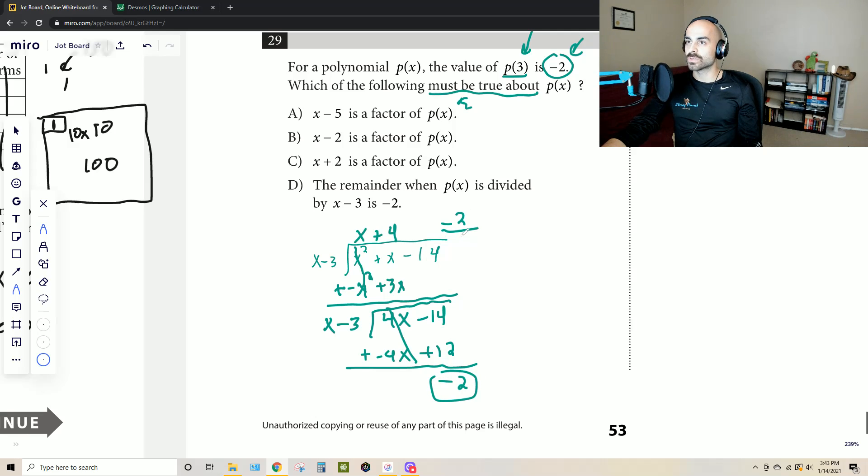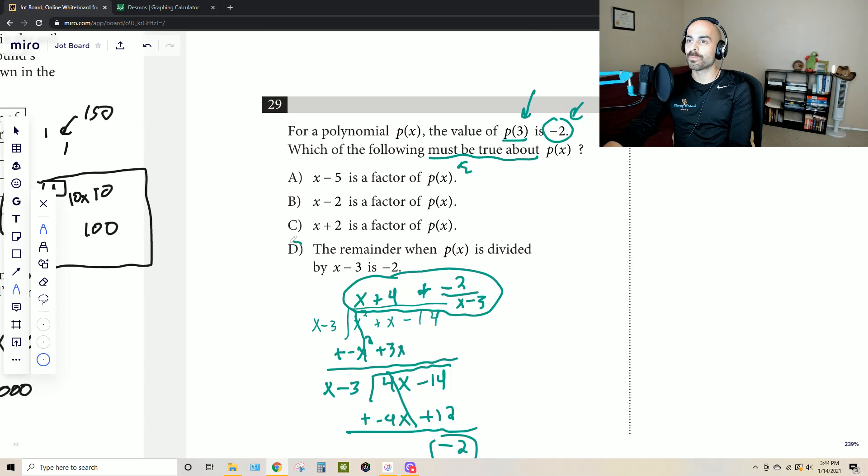Now the idea here is that for sure backs up D. Now when I look at x squared plus x minus 14 as just a polynomial by itself, I see that none of these are actually true in this case. Could they be true?